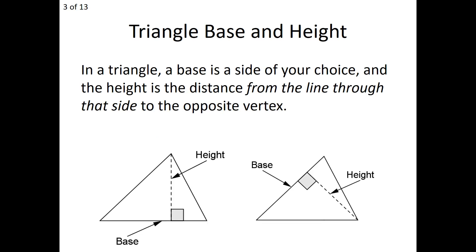We use the exact same jargon in a triangle as well. Again, you choose a side — the base is a side of your choice — and then the height is the distance from the line through that side to the opposite vertex. We find that opposite vertex and drop our height to the line containing the opposite side. In the left diagram, the base is chosen as the bottom, and the height is from the opposite vertex perpendicular down. That segment is our altitude of a triangle, and the altitude length is the height of the triangle.